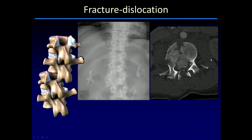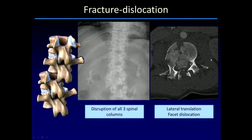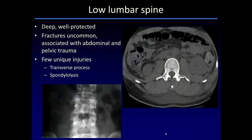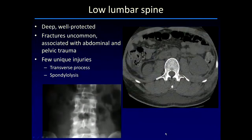The worst pattern of thoracolumbar injury is a fracture dislocation, where all three columns are disrupted in terms of bone and ligament stability. Like in the upper thoracic spine, this severe injury can produce lateral translocations and facet dislocations.